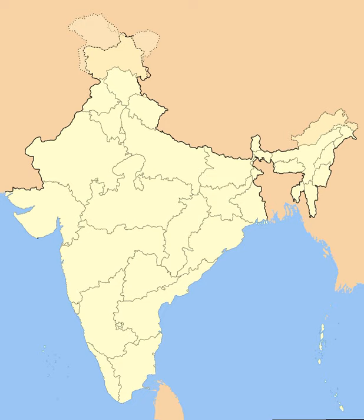The new constitution of India, which came into force on 26 January 1950, made India a sovereign democratic republic. The new republic was also declared to be a "union of states". The constitution of 1950 distinguished between three main types of states. Part A states, which were the former governor's provinces of British India, were ruled by an elected governor and state legislature.